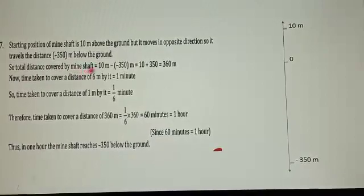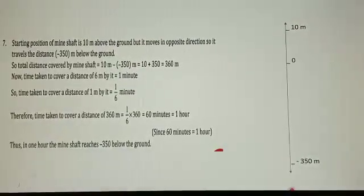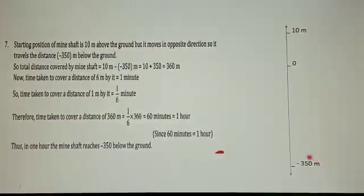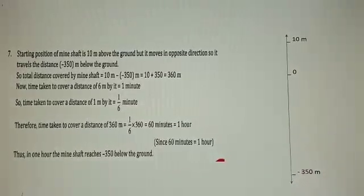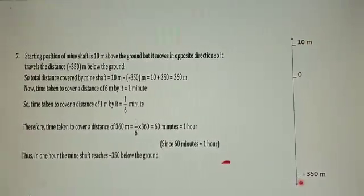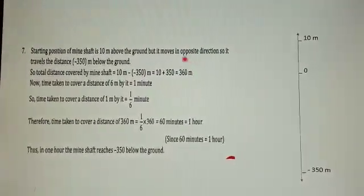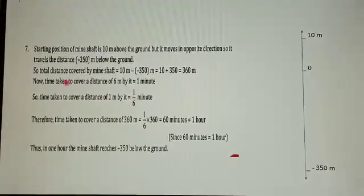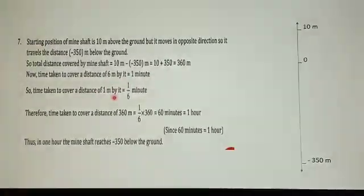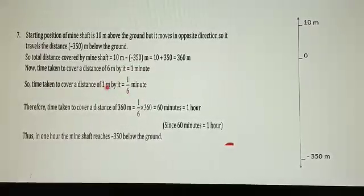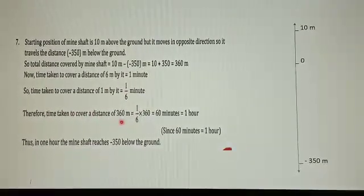Total distance covered by the mine shaft: 10 meters above ground level, and it needs to reach minus 350 meters. To find total distance covered between these two points: 10 minus minus 350 equals 360 meters. So total distance covered by the mine shaft is 360 meters.